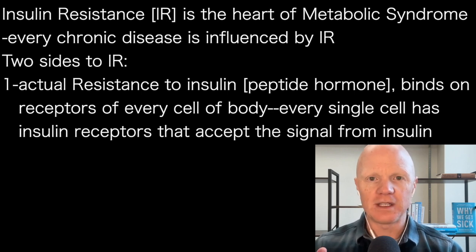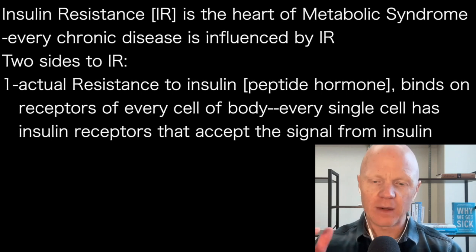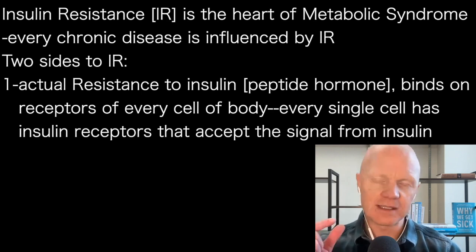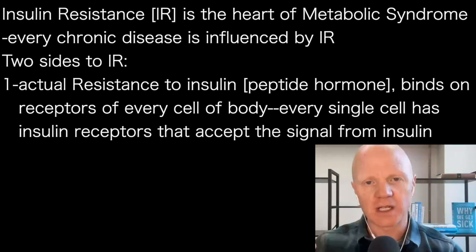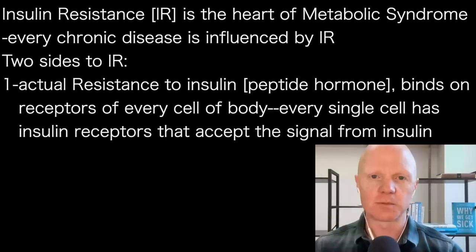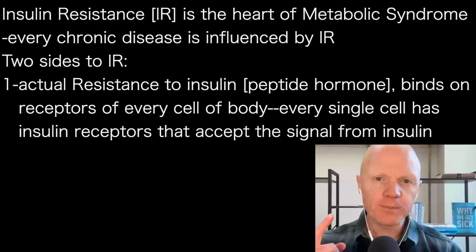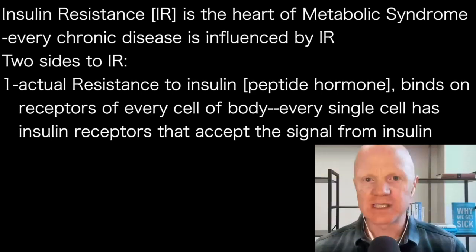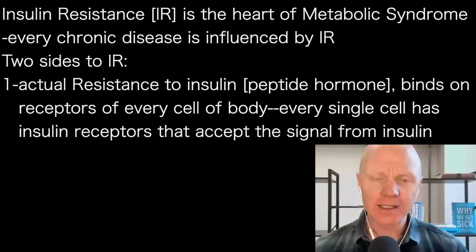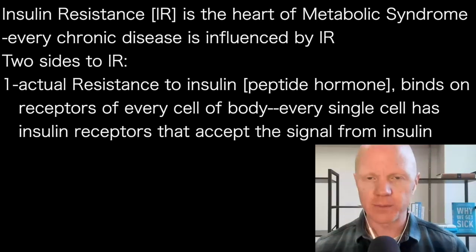I like to invoke the analogy where insulin resistance is like a coin. If I were holding a coin in my hand and I say this coin is insulin resistance — well, the coin has two sides, and so too does insulin resistance. One part of insulin resistance is the actual resistance to the signal of insulin. Insulin is a peptide hormone made from the beta cells of the pancreas.